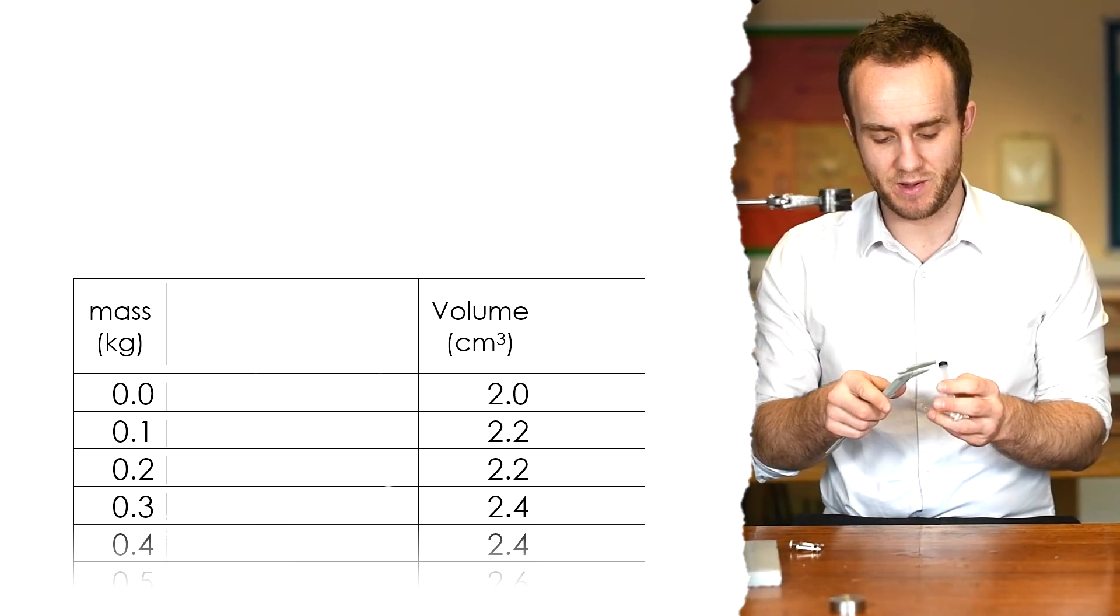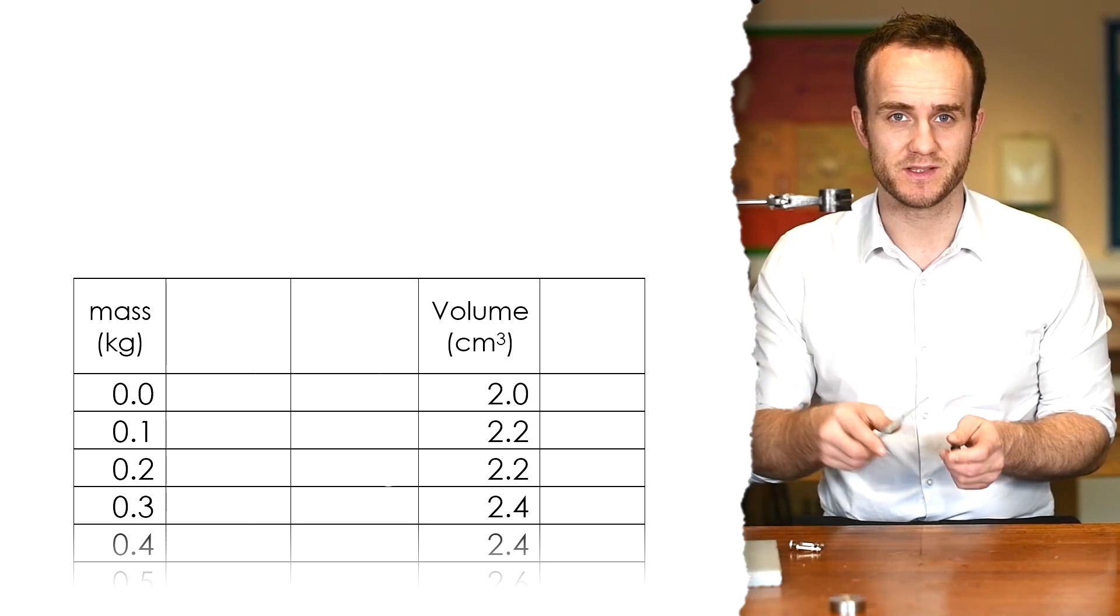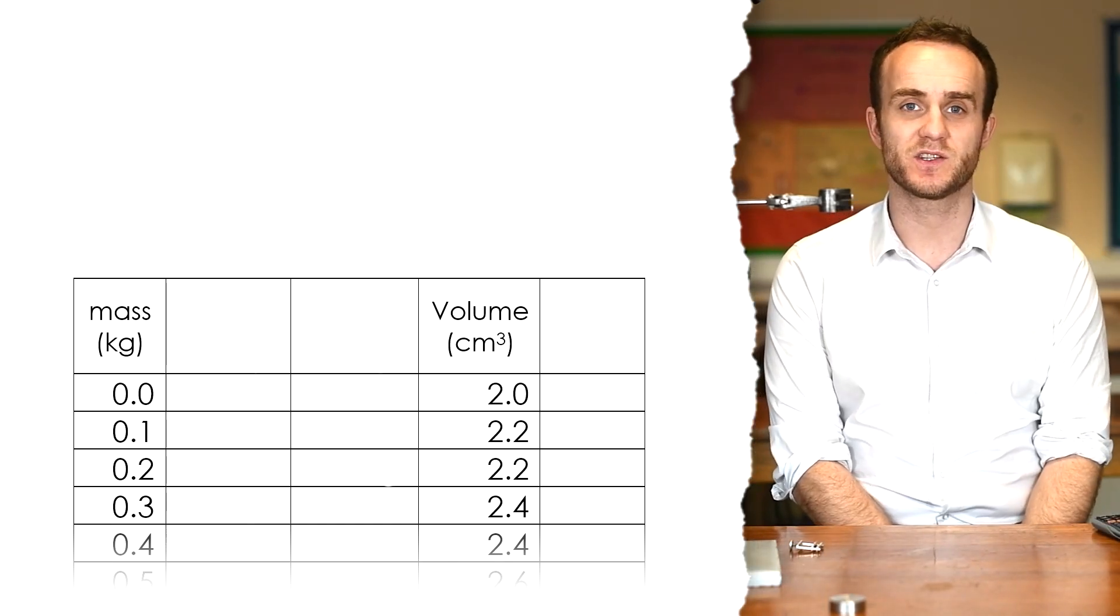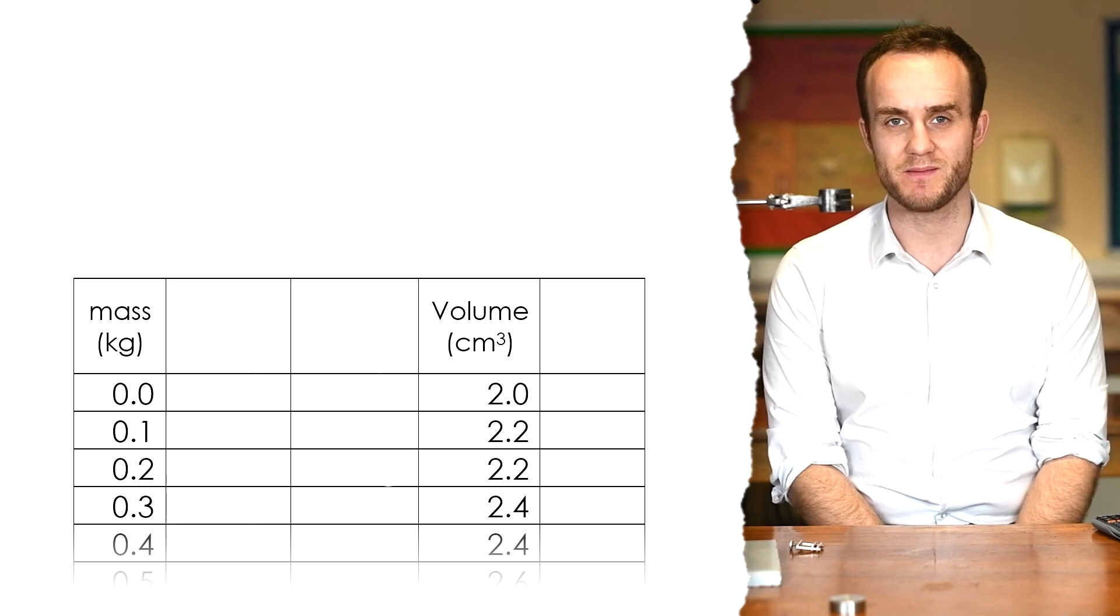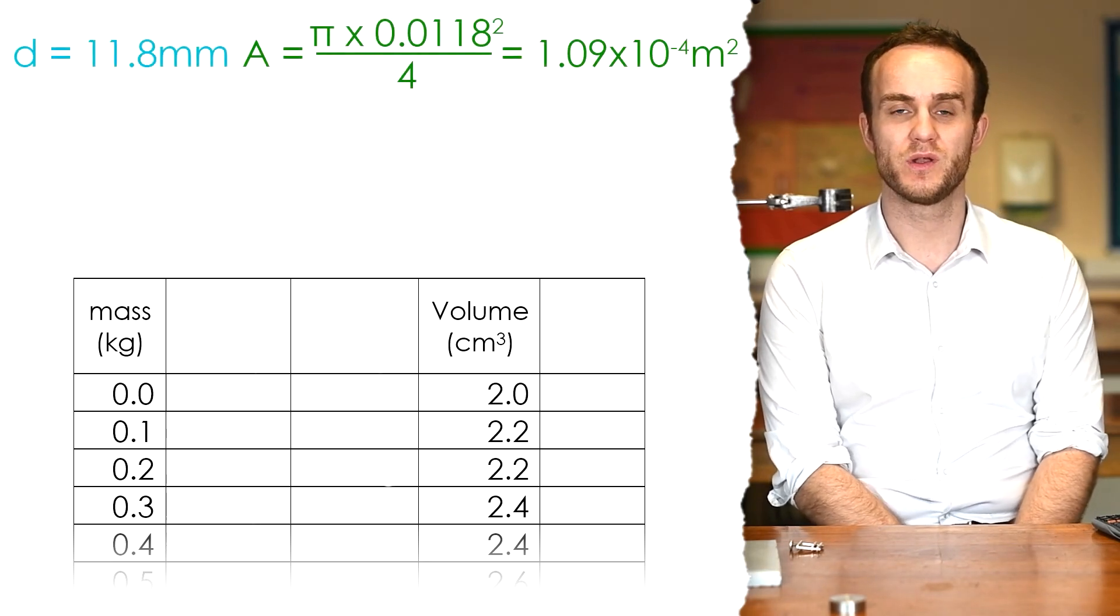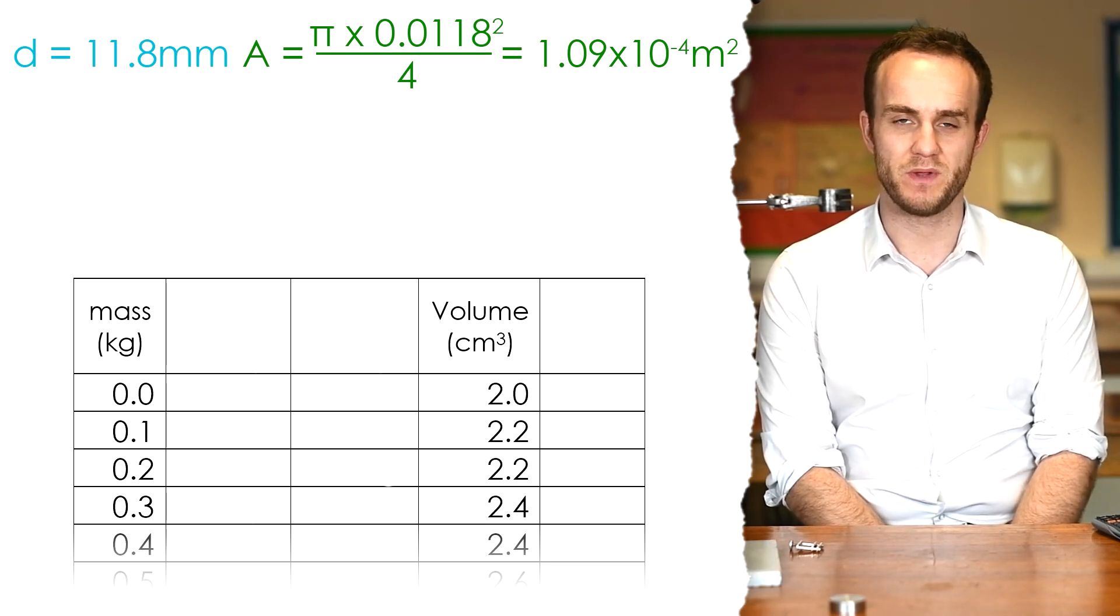Using a vernier caliper, the diameter of my plunger is 11.8 millimeters. So turning that into a cross-sectional area. Putting into my calculator pi d squared divided by 4, pi times diameter squared divided by 4, that gives us a cross-sectional area of 1.09 times 10 to the minus 4 meters squared.